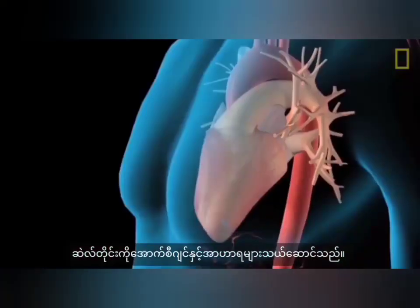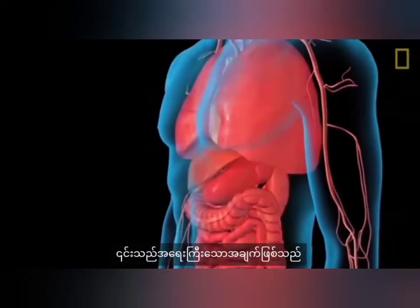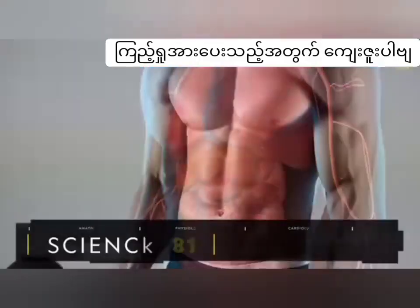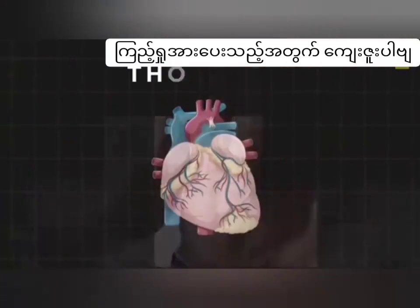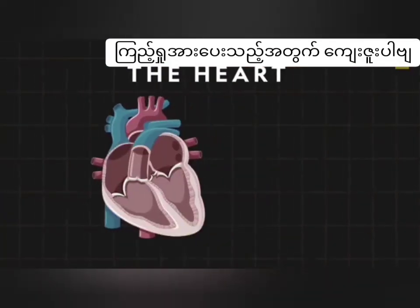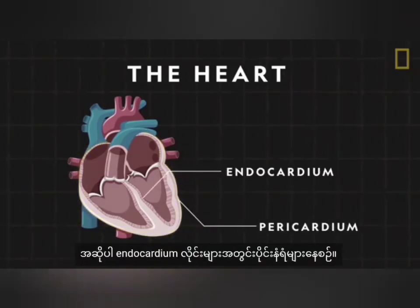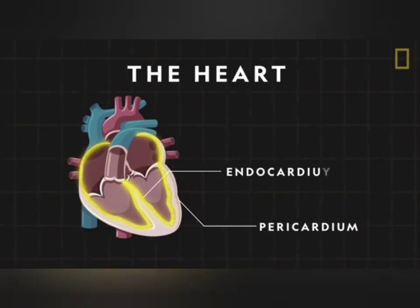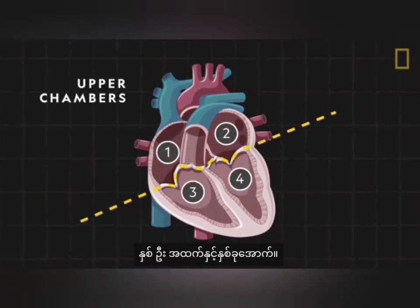Blood brings oxygen and nutrients to every cell — it's this circulation that is vital to sustaining life. The heart is an organ made up of several tough layers of muscle. The pericardium is the thin layer that covers the exterior, while the endocardium lines the inside walls. The heart is divided into four chambers: two upper and two lower.